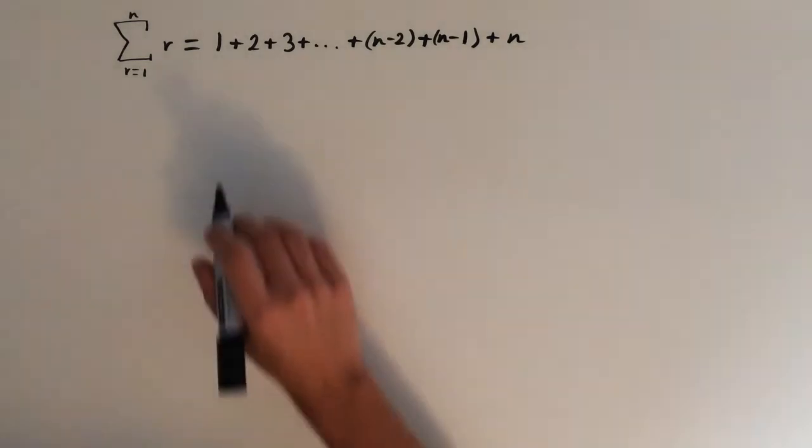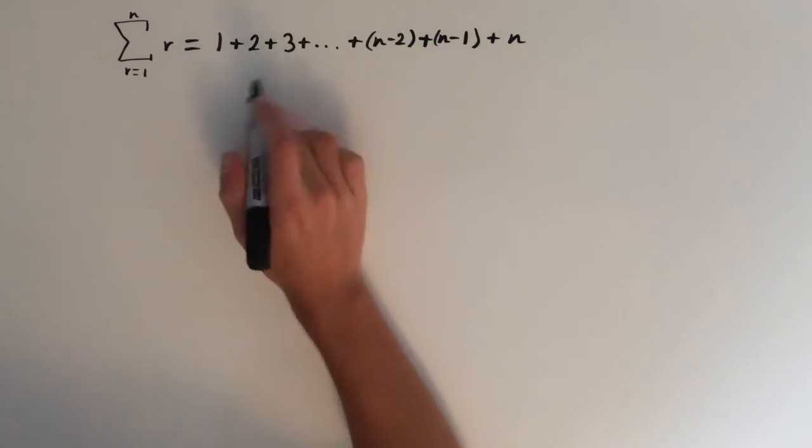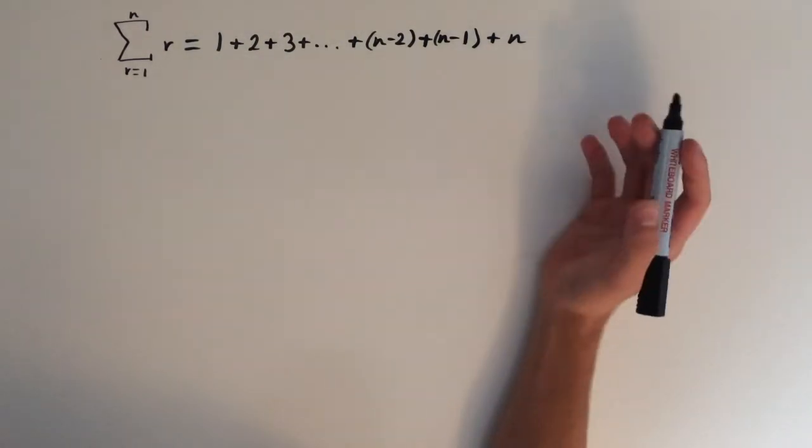What I mean by this is when we add the numbers up, 1 plus 2 plus 3, all the way up to the nth term, what's this going to equal?